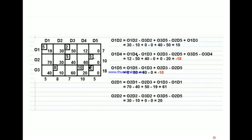First, how we can find if it is a stepping stone degeneracy solution: we count the number of rows and supply plus the number of demand. So three plus five is eight, minus one is seven. We have one, two, three, four, five, six — six allocated cells. Three rows plus five columns minus one equals seven, but we have six allocated cells, so this is a degeneracy problem.